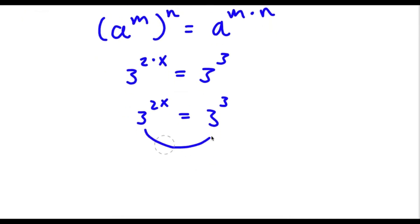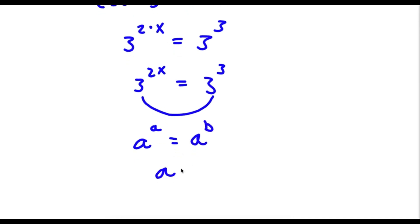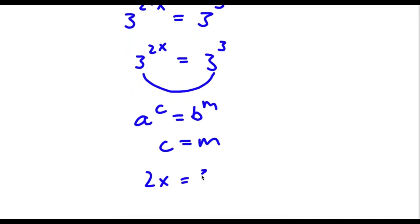Now if you notice, both of these have the same bases — both bases are 3. If I have something in the form a to the power of c is equal to a to the power of m, this means that c is equal to m. So in this case, 2x is equal to 3.